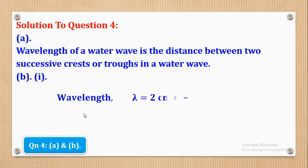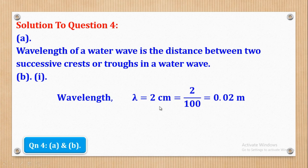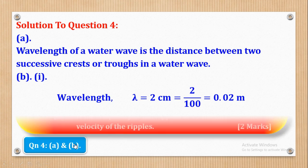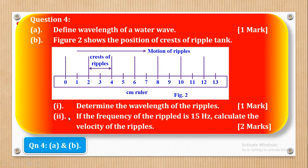You have to change it to SI units by dividing by 100. So when you say 2 divided by 100, you will come up with 0.02 meters, and that is what they wanted in roman 1.